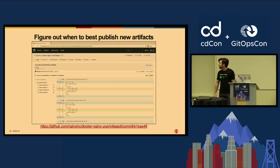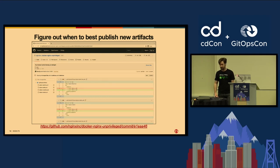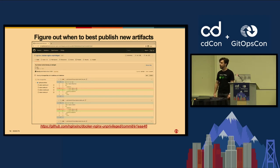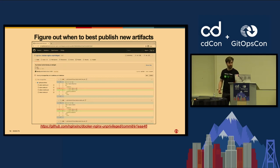Second lesson: figure out when to best publish new artifacts. This is especially relevant if you're pushing something like Docker images to a container repository, but it also applies to packages in general. There are some unwritten rules around publishing packages — for example, you never publish something new on a Friday, because if things break, people are going to have to stay over the weekend. So you've got to figure out what makes the most sense for your project.